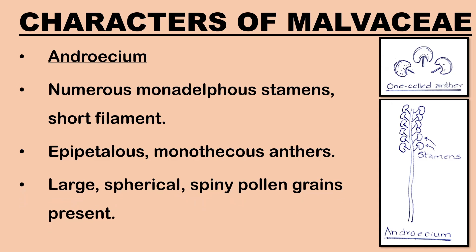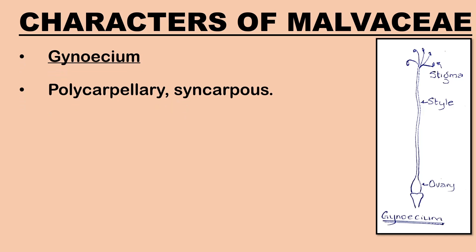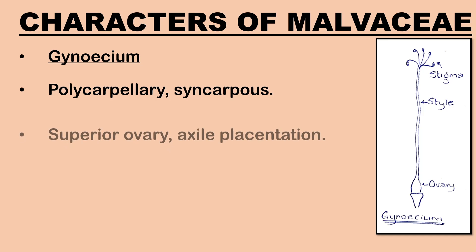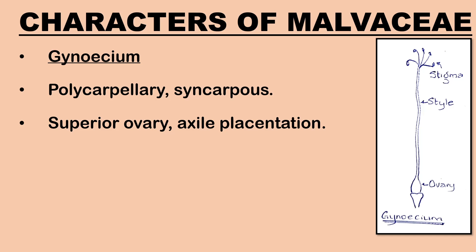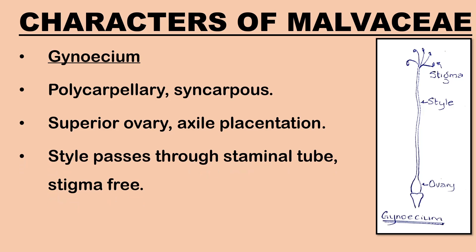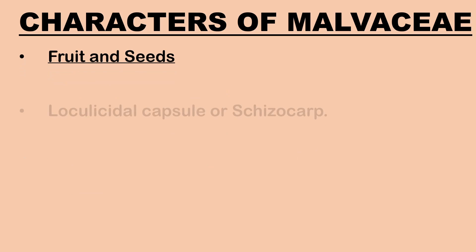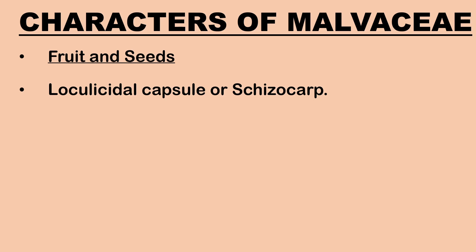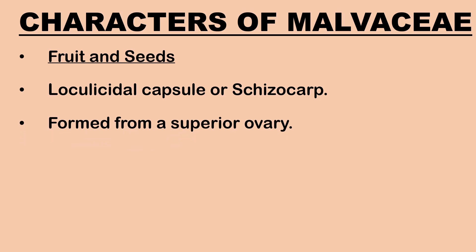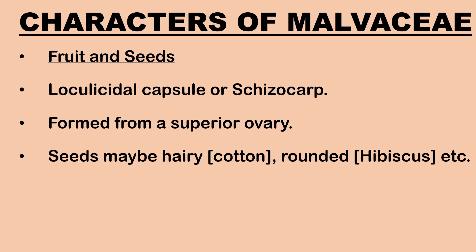Large, spherical and spiny pollen grains are present. Gynoecium is a single compound pistil of two to many carpels — polycarpellary, syncarpous. The ovary is superior, pentalocular or multilocular with axile placentation. The style passes through the staminal tube. The stigmas are free and are as many as the carpels. Fruit is mostly a loculicidal capsule or sometimes a schizocarp. The fruit is always formed from a superior ovary. Seeds may be hairy as in cotton or rounded as in hibiscus; in some species, they are kidney-shaped.